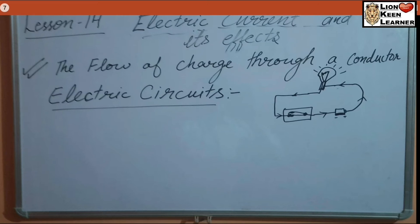Electric circuit kya hai? A continuous conducting path consisting of wire, bulb, switch, etc., between two terminals of a cell or battery, along which an electric current flows, is called an electric circuit. A simple circuit hota hai jisme aap dekh rahe hain.